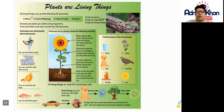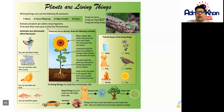First of all, living things move. They have offspring — in other words, children. They take in food, and they all grow. So animals and plants are called living organisms. To be alive they must carry out the four life processes: they need to move, have offspring, take in food, and also grow.